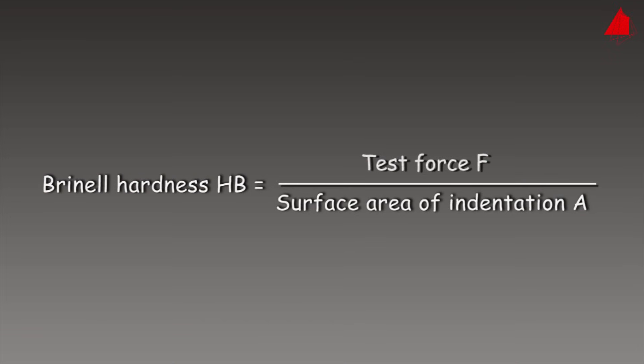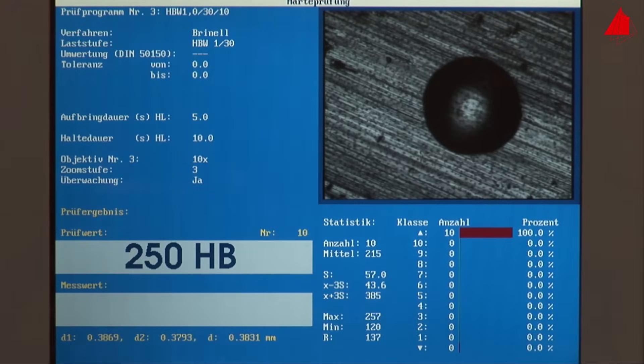The hardness value is defined as test force F in the old unit kilopond divided by the area of the indentation A in square millimeters. The result is displayed on the bottom left-hand corner of the screen and amounts to 250.